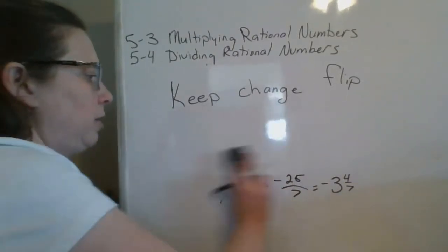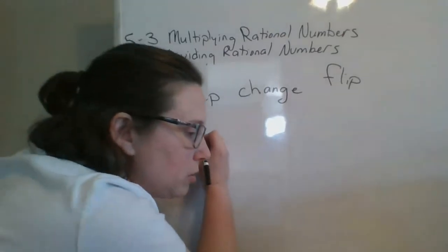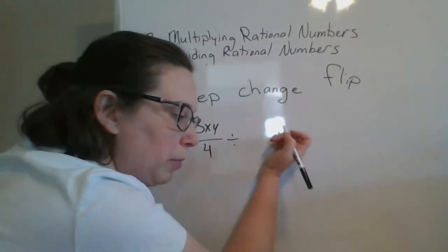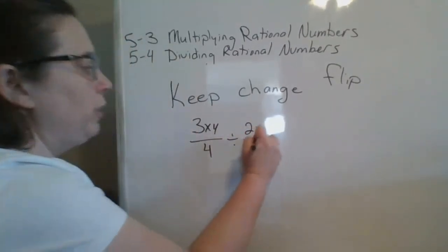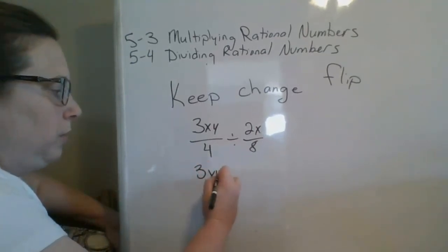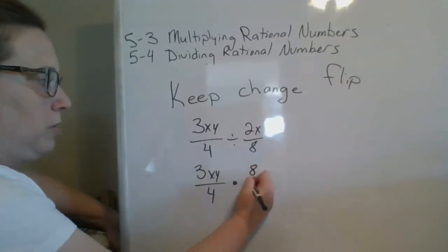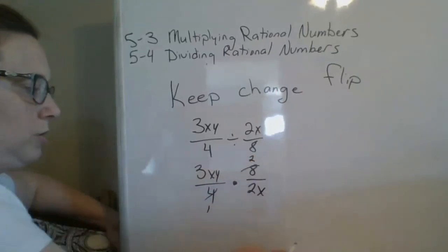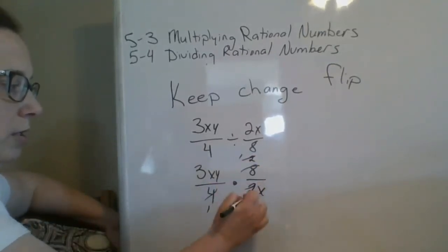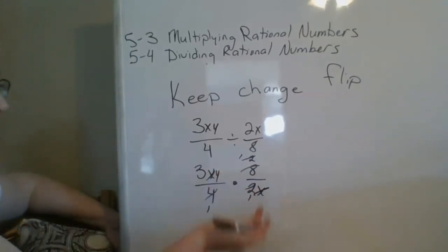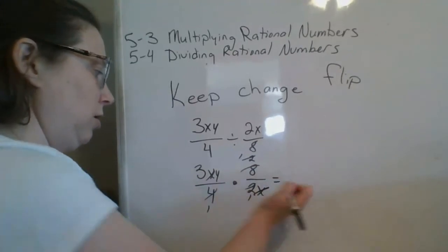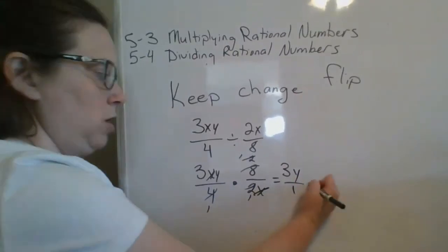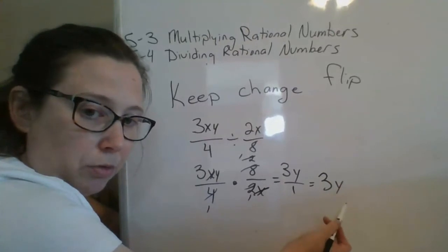Next up, we have some algebraic fractions: 3xy over 4 divided by 2x over 8. We are going to keep, change, flip. Now I have a 4 here and a 4 here, so I cross-reduce that. The 2s cancel out and the x's cancel out. We have 3y times 1, which is just 3y. 1 times 1 is 1. So our answer is a nice, simple 3y.